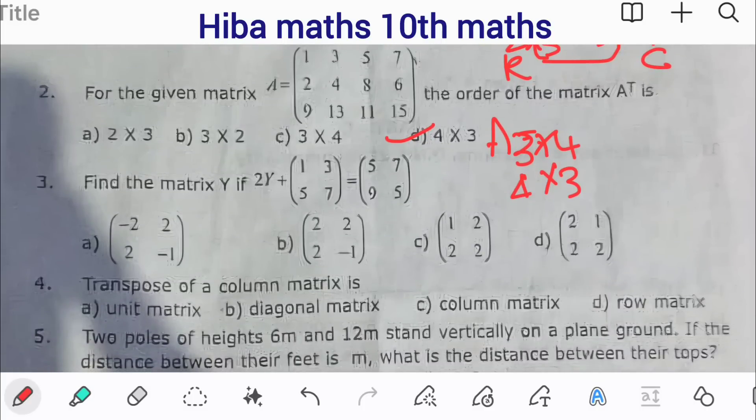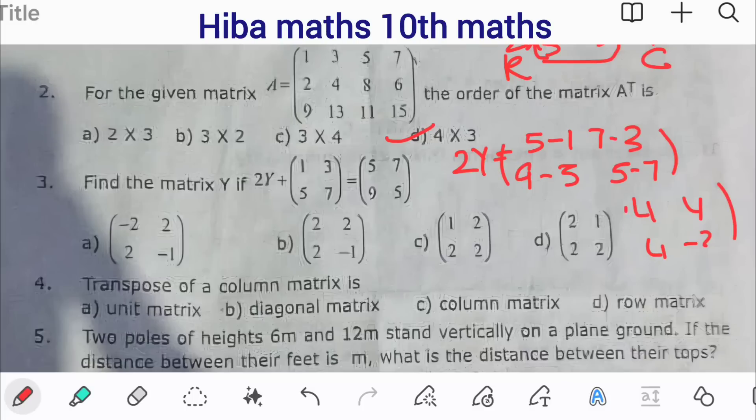Find the matrix Y if 2Y plus the matrix [1, 3, 5, 7] equals [5, 7, 9, 5]. Let's solve this. 2Y equals [5 minus 1, 7 minus 3, 9 minus 5, 5 minus 7], which gives us [4, 4, 4, minus 2]. Dividing by 2 gives Y equals [2, 2, 2, minus 1].